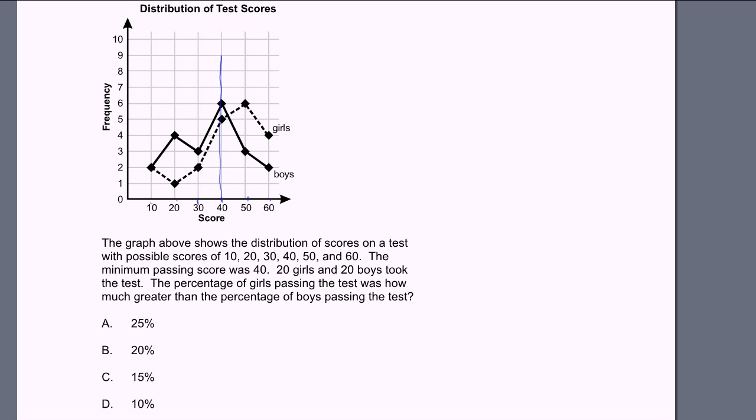Let's see how many girls passed the test. This dotted graph is the girls. So 5 got a 40, they passed. Then you had another 6 girls get a 50, and another 4 girls get a 60. So that's how many girls passed. 5 plus 6 is 11, plus 4 is 15 girls passed. There were a total of 20 girls. So 15 out of 20, or 75% of girls passed.